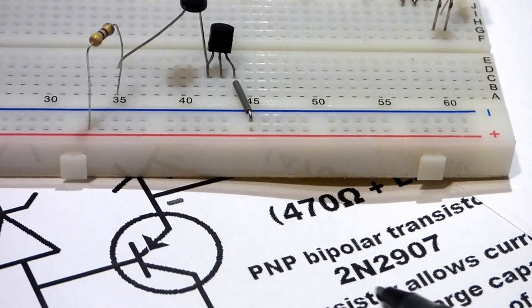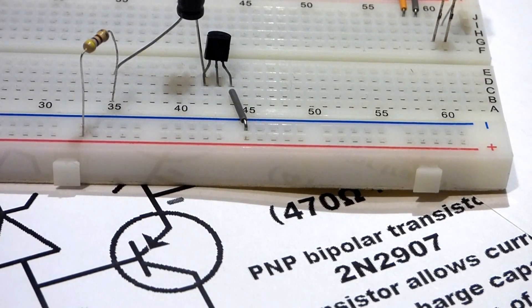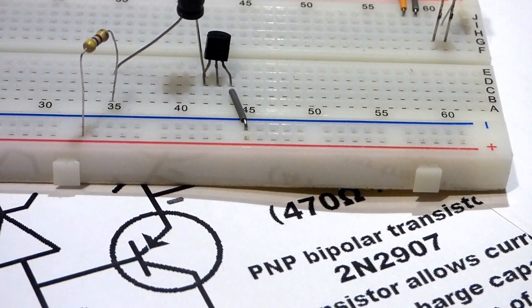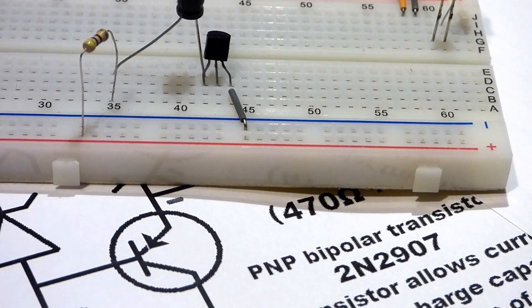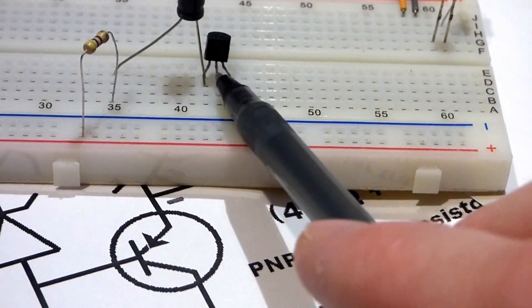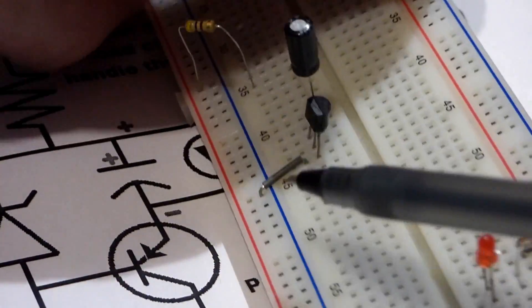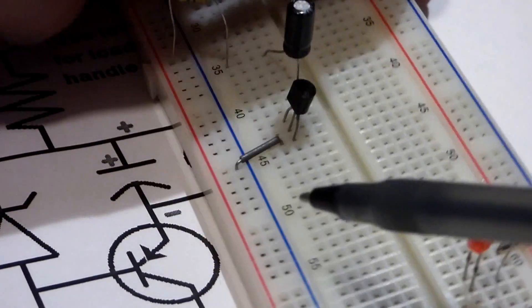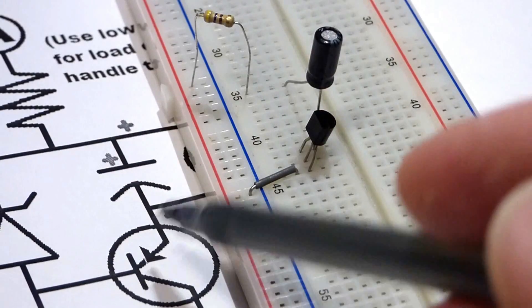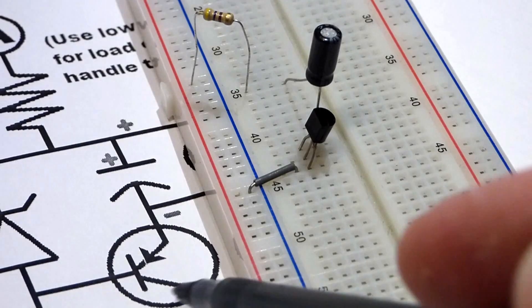This transistor is a 2N2907 PNP transistor. This just happened to be one I had laying around—you don't have to use this one. I didn't really research it, I just threw it in there to test out the circuit. Going from left to right, the pins are emitter, base, collector. The flat side of the transistor here is pointing left, so on the top we have the emitter, then base, and collector down below.